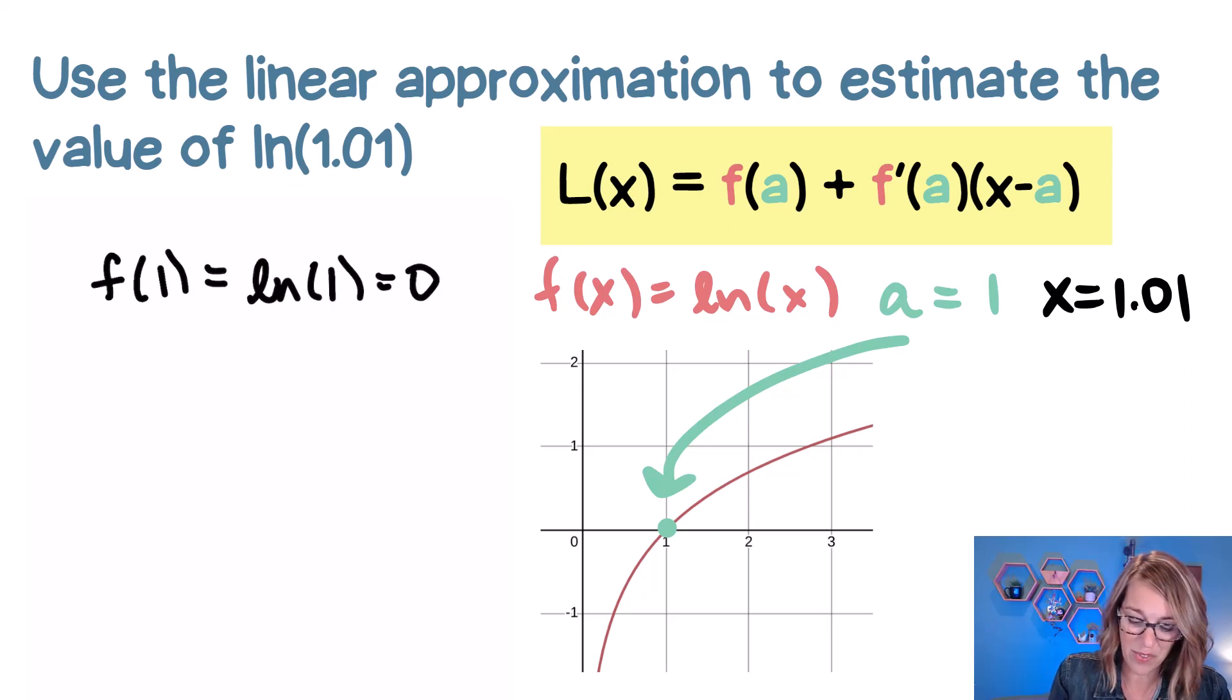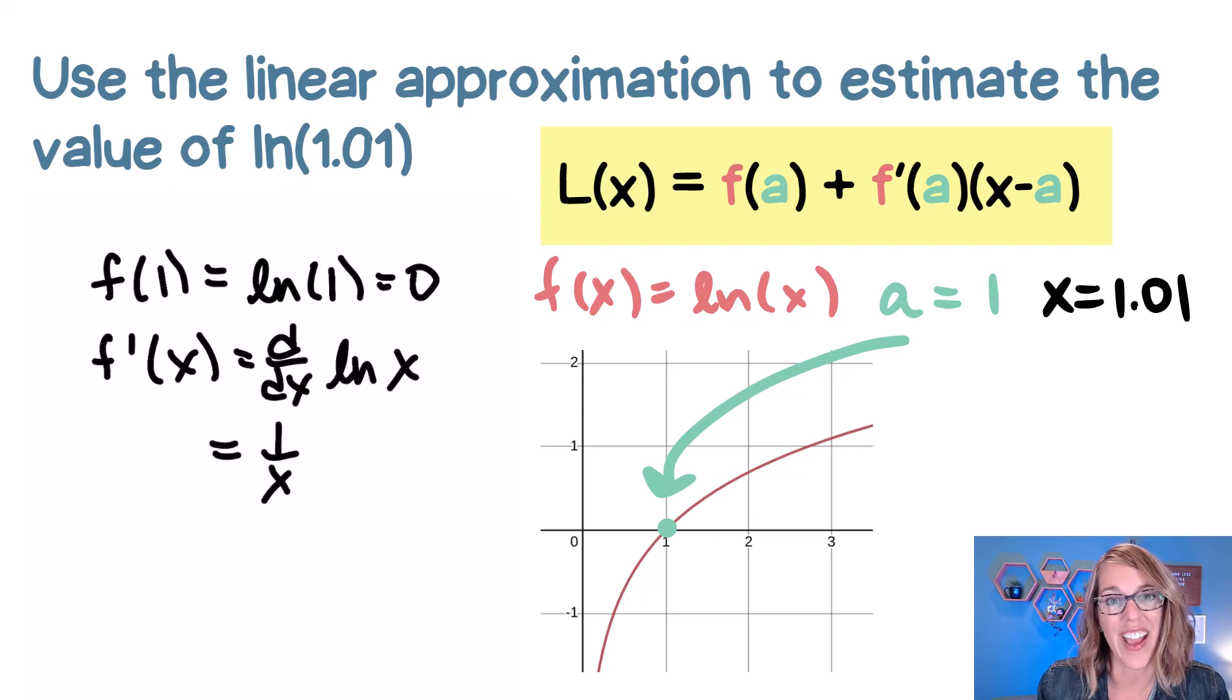We also need that derivative evaluated at A. I'll do the derivative of our function first. That's going to be d/dx of the natural log of X. That's just going to be a 1 over X. So to find that derivative evaluated at 1, that's just going to be 1 over 1 or 1.